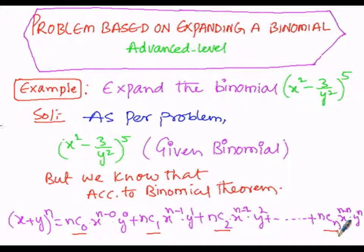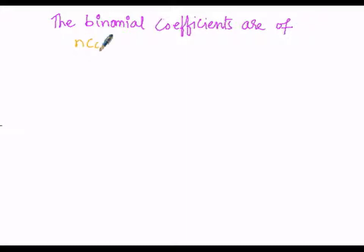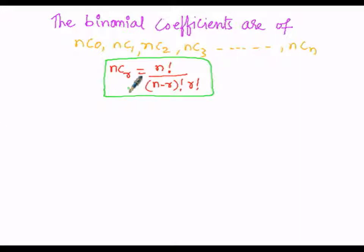As per the problem, the binomial coefficients are nC0, nC1, nC2, nC3, and so on up to nCn. To find nCr, the formula is: nCr = n! / ((n − r)! × r!).